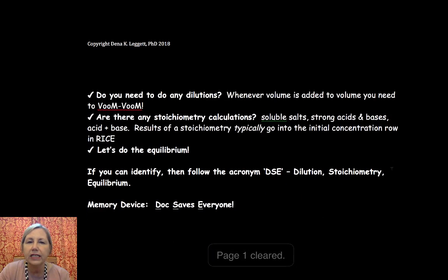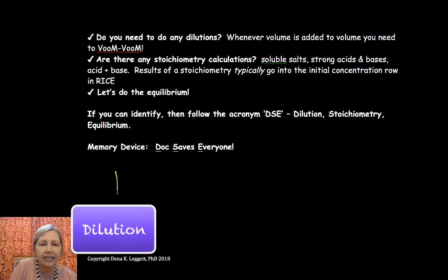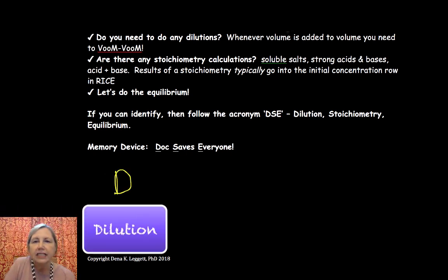So let's take a look at the problem-solving grid. One of the first things you want to do is ask yourself, is there a dilution present? Did you add volume to volume? I'll tell you, I was working a key for an AP test once, and I missed this. I just was reading too fast. So if you see volume to volume, you have to voom-voom. Volume 1 times molarity 1 is equal to volume 2 times molarity 2. That's your dilution formula.